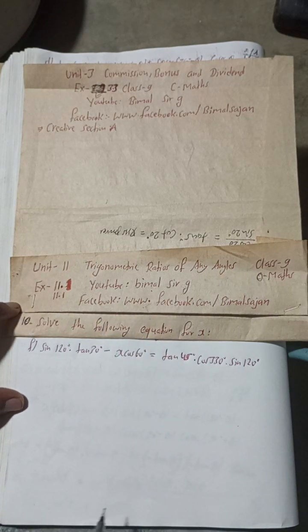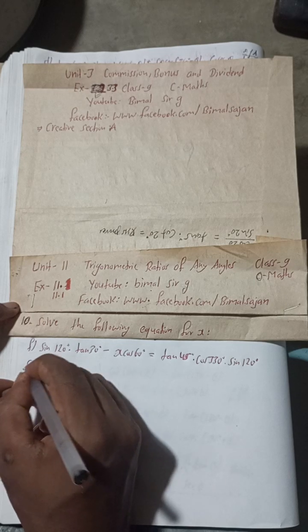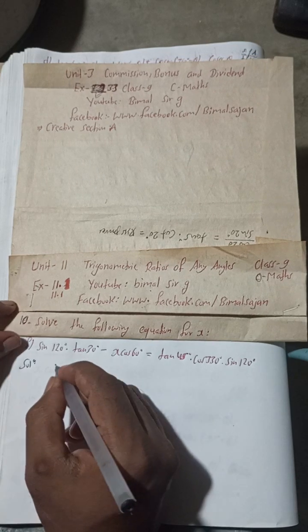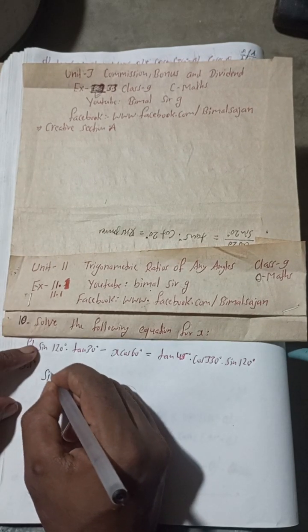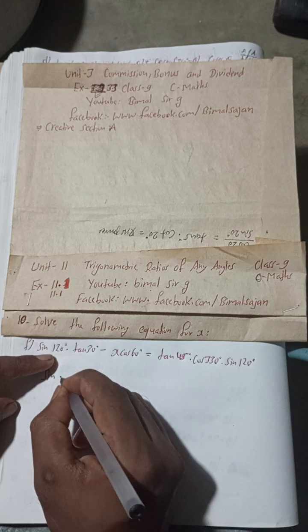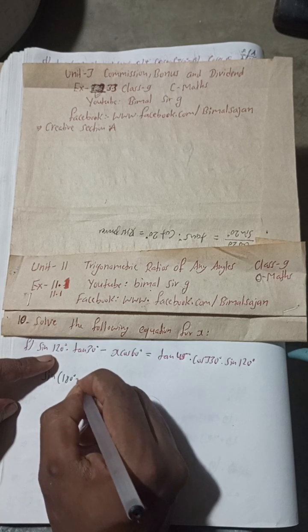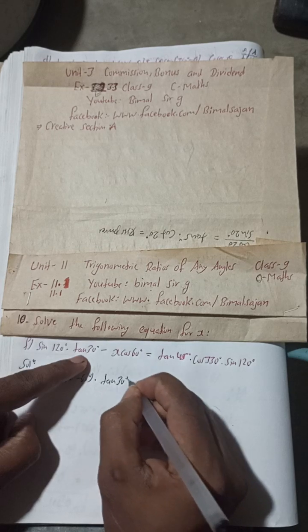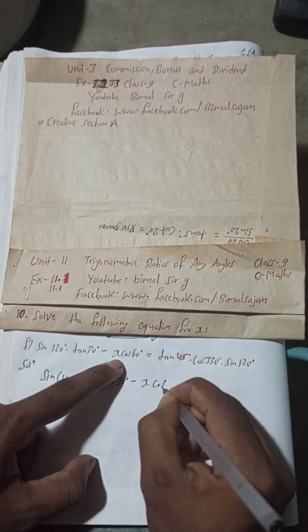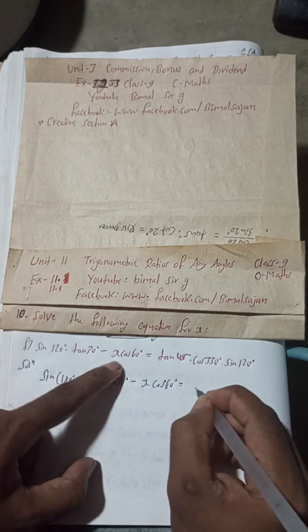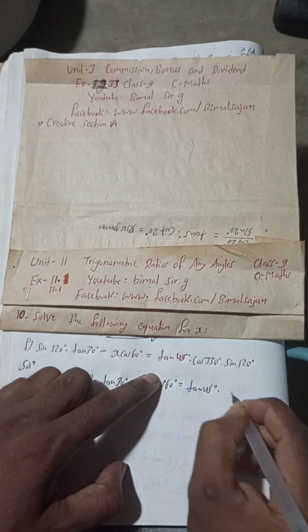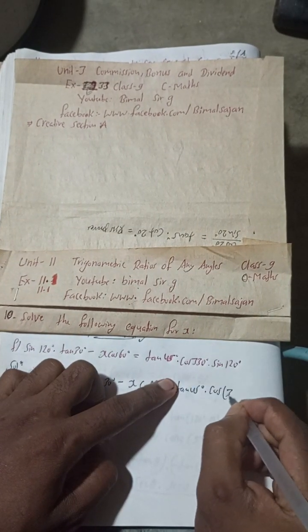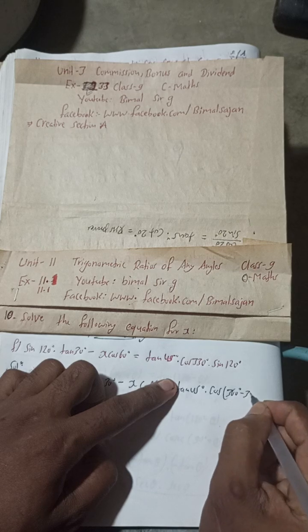If you find this video useful then give us a comment. Let's begin the solution. Here is sin 120 degree, so this sin 120 degree can be written as 180 degree minus 60 degree. Into tan 30 degree as it is, minus x cos 60 degree as it is, is equal to tan 45 degree into cos 330 degree.